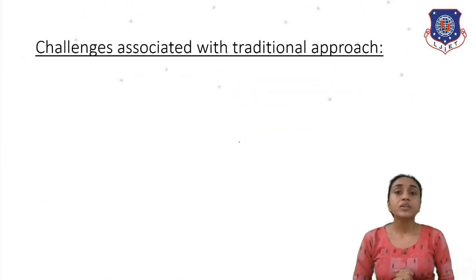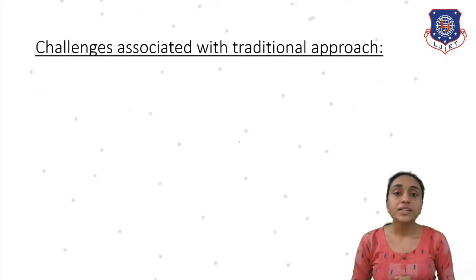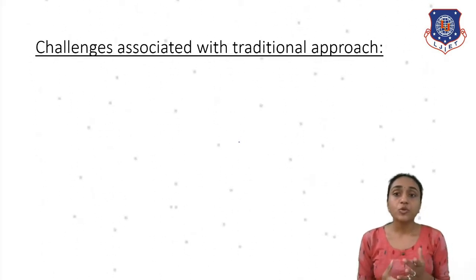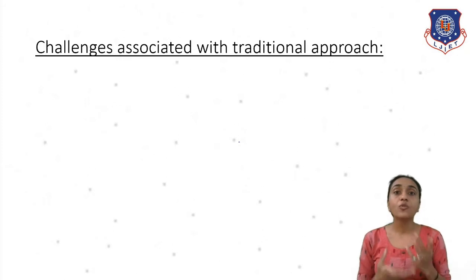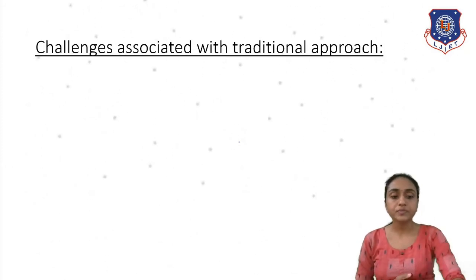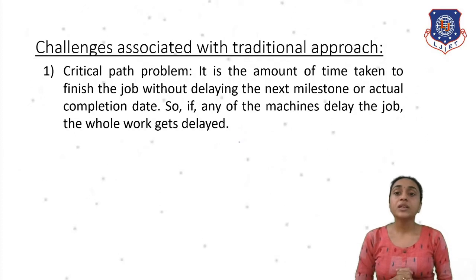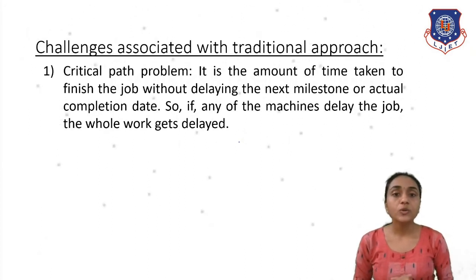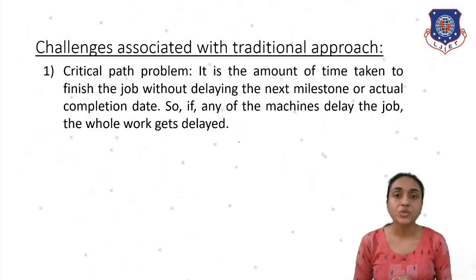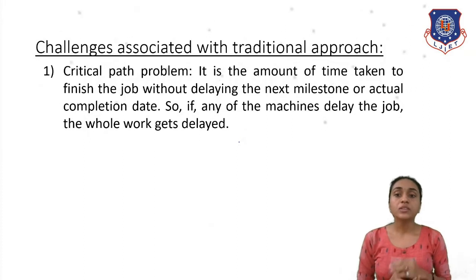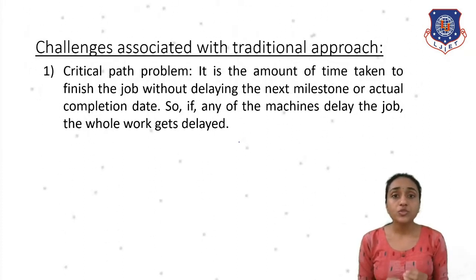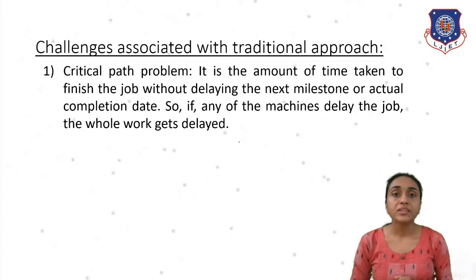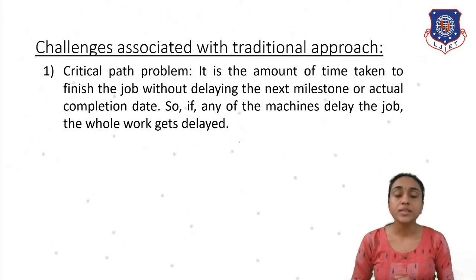Now, what are the different challenges associated with the traditional approach? Understanding these challenges tells us why we need MapReduce. The first challenge is the critical path problem — the amount of time taken to finish a job without delaying the next milestone to the actual completion date. If any machine delays the job, the whole work gets delayed. This is the most crucial problem with the traditional approach, which is why we use MapReduce.